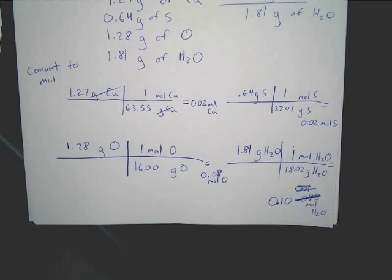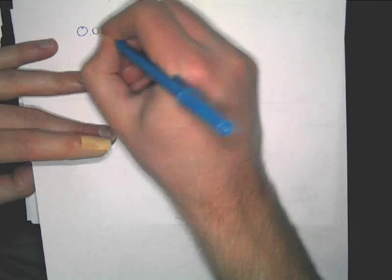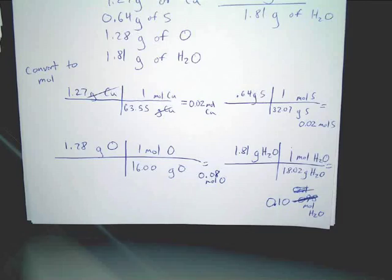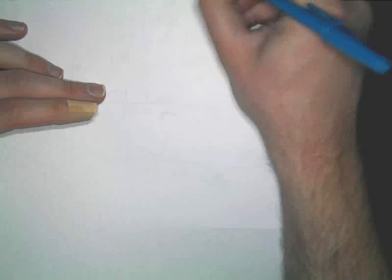Notice that water was treated as one thing — we didn't break it up into H and O separately. We just treated it as H₂O, one molecule. To make things neat, recopy the values: 0.02 moles of copper, 0.02 moles of sulfur, 0.08 moles of oxygen, and 0.1 moles of H₂O.